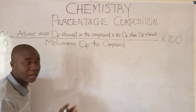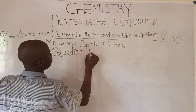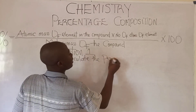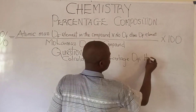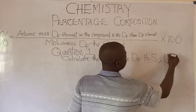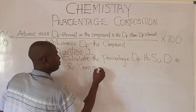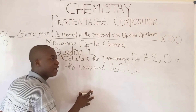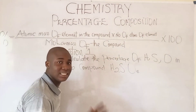Let's solve the first question. The question says: calculate the percentage of hydrogen, sulfur, and oxygen in the compound H2SO4. They are asking us to calculate the percentage of hydrogen, the percentage of sulfur, and the percentage of oxygen.